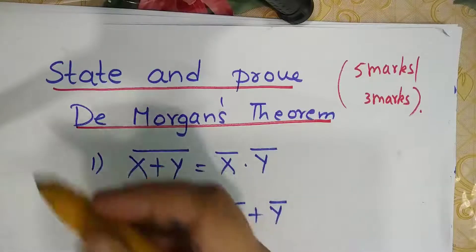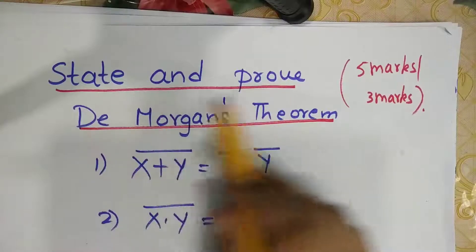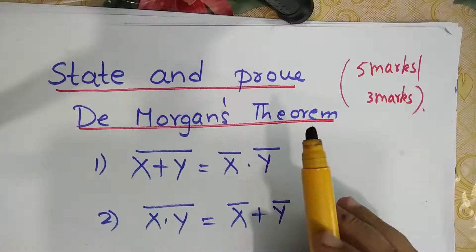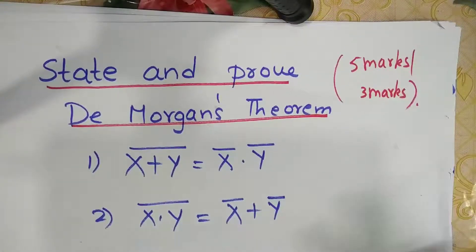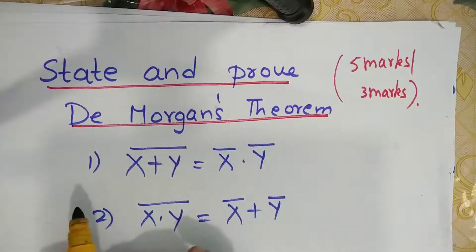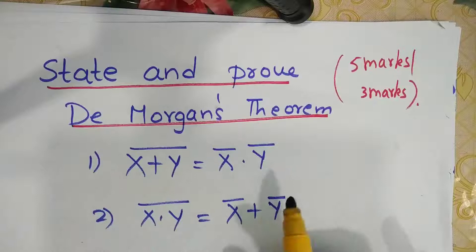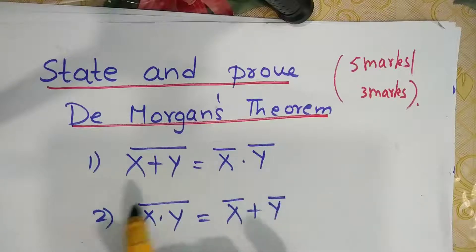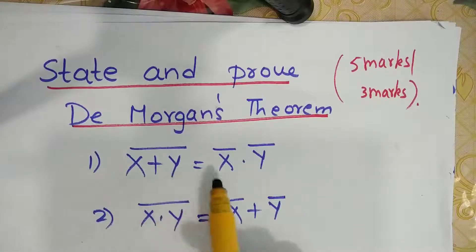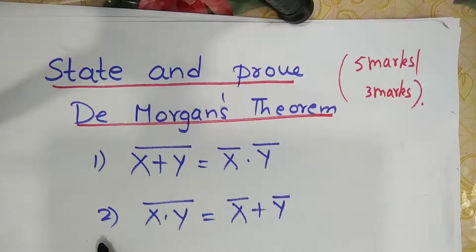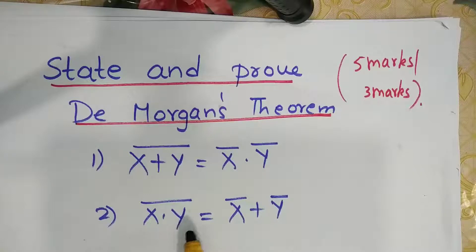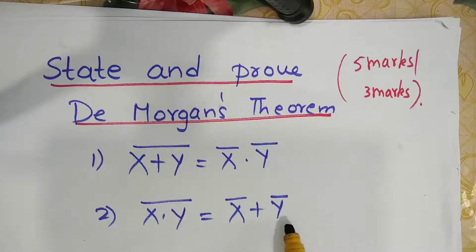When this question comes as 'state and prove De Morgan's theorem', the first step you need to do is write the statements. Many students do not write the statement at all, so please write these two statements. The first theorem states that (x + y)' = x' · y'. The second theorem states that (x · y)' = x' + y'.